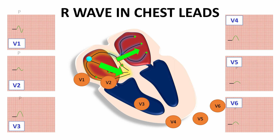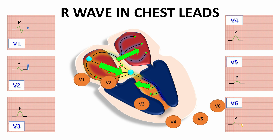The depolarization of the heart starts with atrial depolarization, drawn as a biphasic P wave in lead V1 and a positive wave in all other chest leads. Then we have the AV nodal delay, represented by the PR segment. After that, septal depolarization occurs from left to right and upward toward V1 and V2, drawing a positive small R wave in those two leads, and away from V6, drawing a small Q wave in V6.